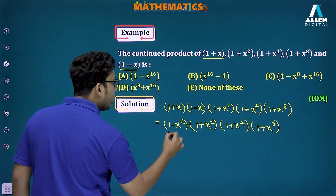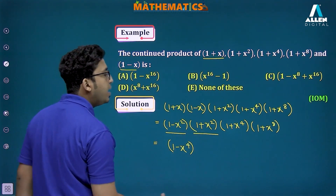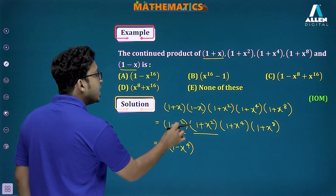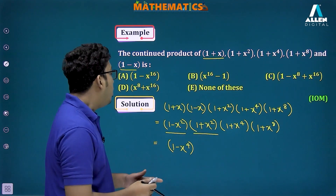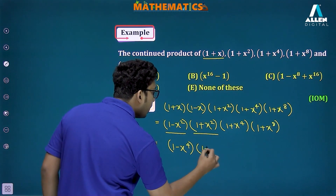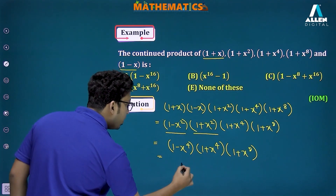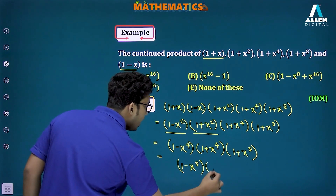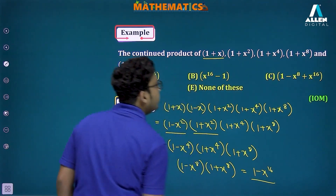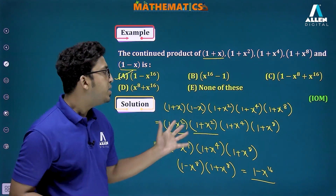Now (1-x²)(1+x²) = (1-x⁴), applying the same identity again. Then (1-x⁴)(1+x⁴) = (1-x⁸). Finally, (1-x⁸)(1+x⁸) = (1-x¹⁶), which is our final answer. Option A is the correct answer. This is a very easy question previously asked in IOM — to solve it we simply remember all the identities.